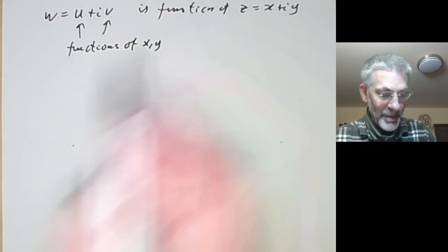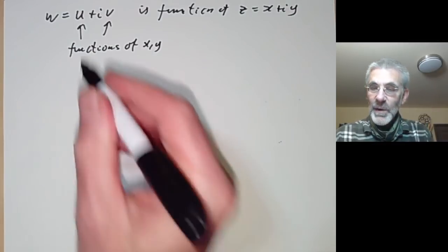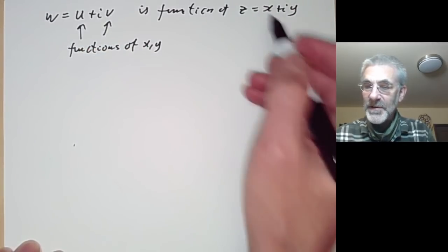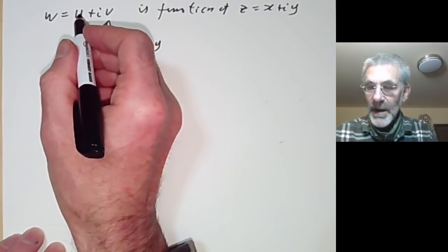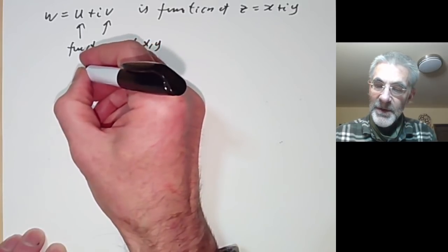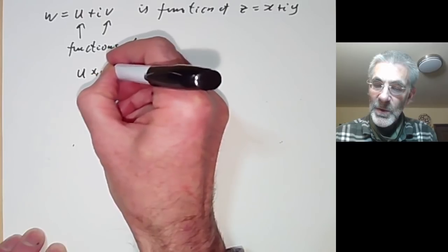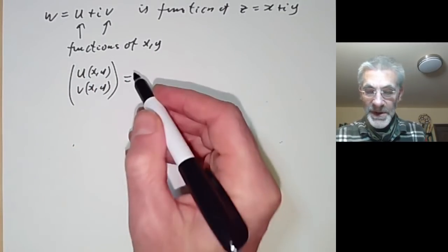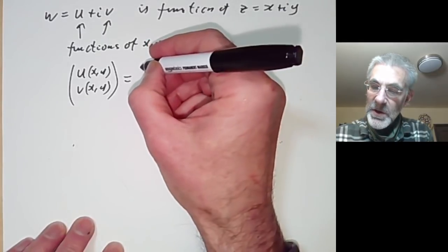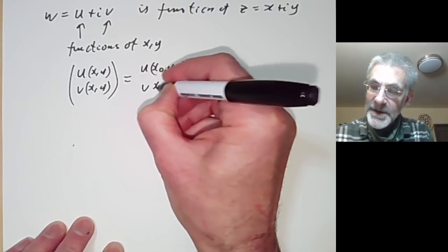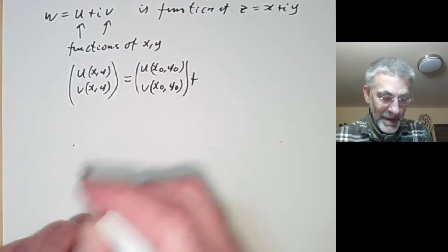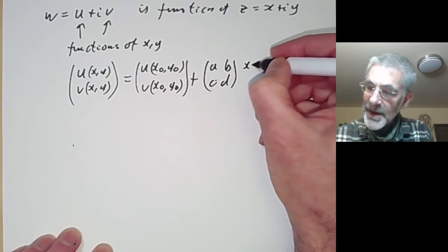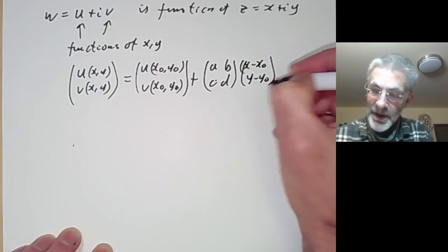What does it mean for this function of two variables to be differentiable as a function of x and y? Well, we write u and v as a vertical vector — the vector-valued function (u(x,y), v(x,y)) — and we want to say it's approximately linear. So it's going to be (u(x₀,y₀), v(x₀,y₀)) plus some linear function written as a matrix times (x minus x zero, y minus y zero), plus an error.